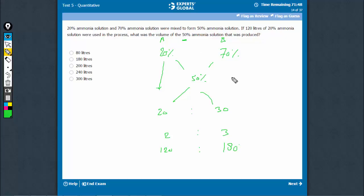What was the volume of 50% ammonia that was produced? So it's not asking you 180. It's asking you the total. So the total is 300. That's right.